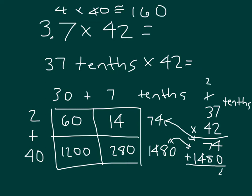Carefully adding those together, I have 1,554 tenths, which equals 155 and 4 tenths. So, 3.7 times 42 is 155.4, which is close to my estimate.